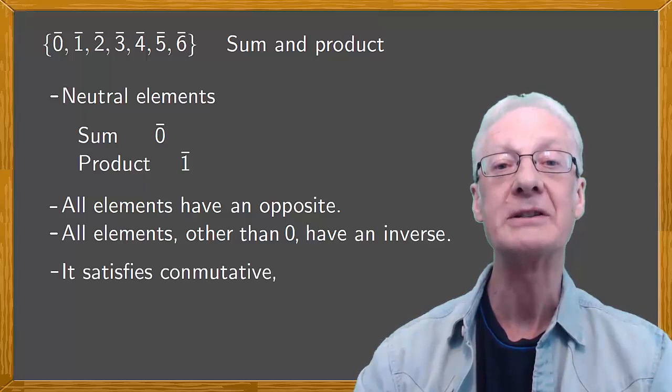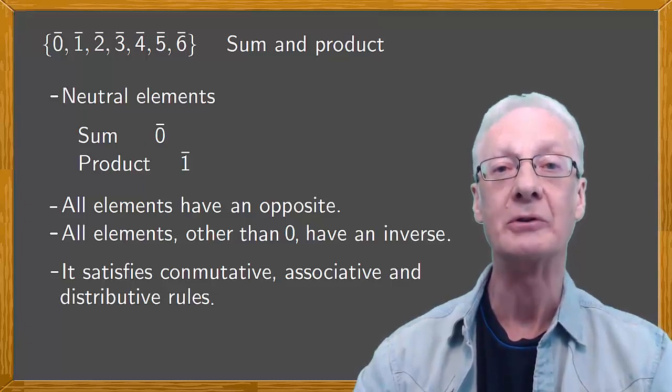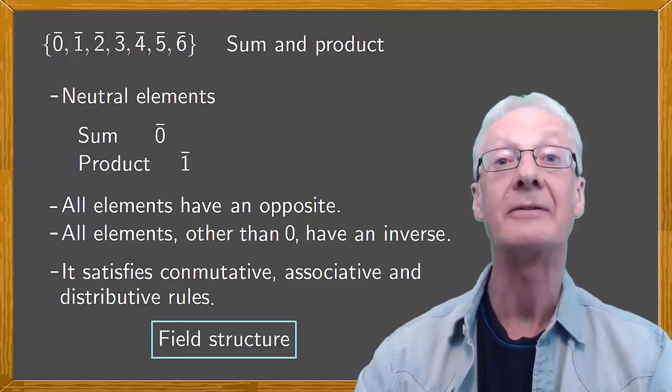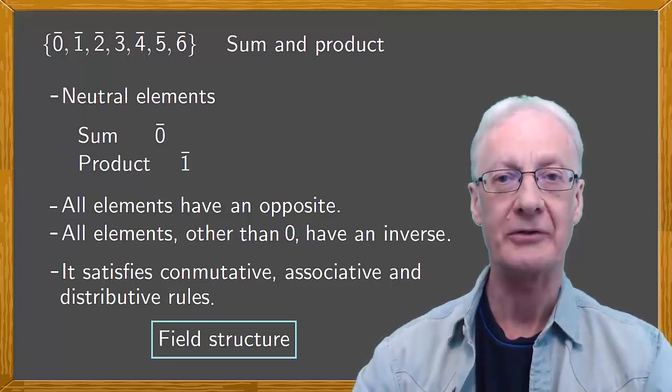There are also analogous properties in modular arithmetic to the sum and product of rational and real numbers. These are the commutative, associative, and distributive properties. So again, we're dealing with a set of rules that defines a field.